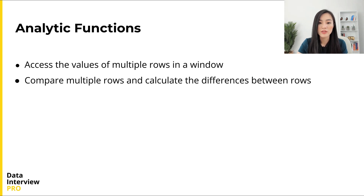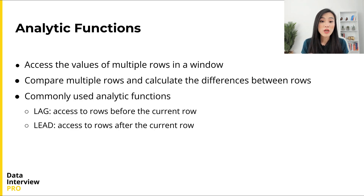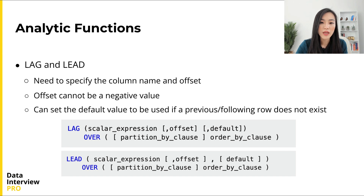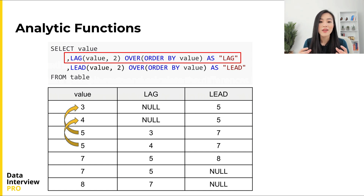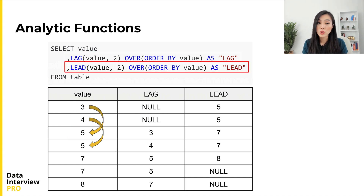Finally, let's look at analytic functions. These functions are used when we need to access values of multiple rows in a window — frequently used to compare rows and calculate differences between them. The two common functions are LAG and LEAD. LAG provides access to rows before the current row, while LEAD provides access to rows after it. For both, we specify the column name and an offset indicating the exact number of rows before or after the current row — note that the offset cannot be a negative value. We can also set a default value used when a previous or following row does not exist. In this example, LAG(value, 2) creates a new column where each row is two rows before the current row, and LEAD(value, 2) creates a column where each row is two rows after the current row.